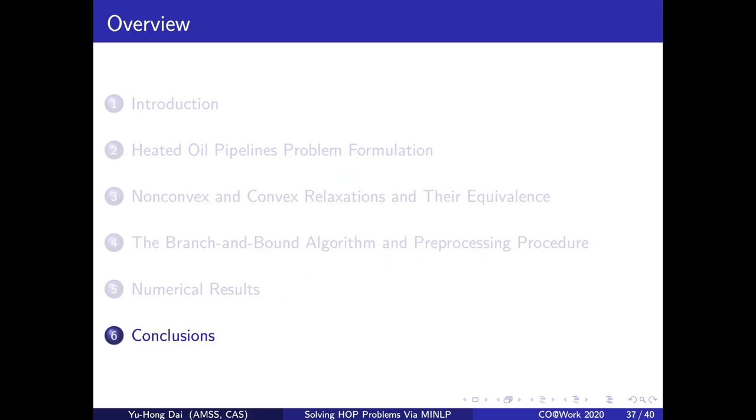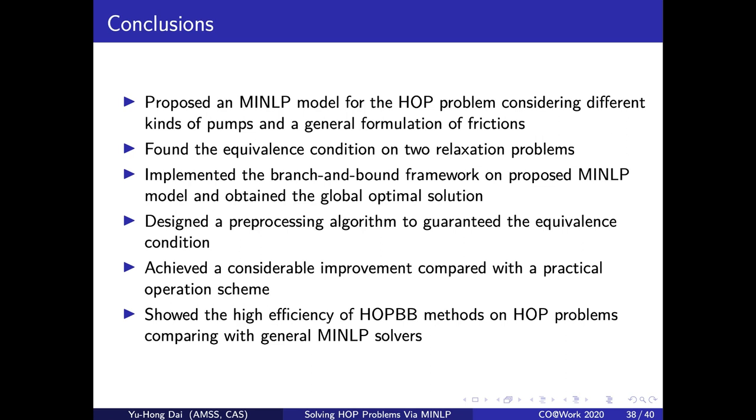Now we give some conclusions. In this talk, we introduced an MINLP model for the HOP problem. We gave two relaxations of the MINLP model and analyzed the equivalence property between them. We also introduced the HOPBB method, which implements the branch-and-bound framework. To guarantee the equivalence conditions, we also gave a preprocessing procedure. The case study on the QT pipeline showed that the HOPBB method can achieve a better scheme, and it is very efficient comparing with some general non-convex MINLP solvers.